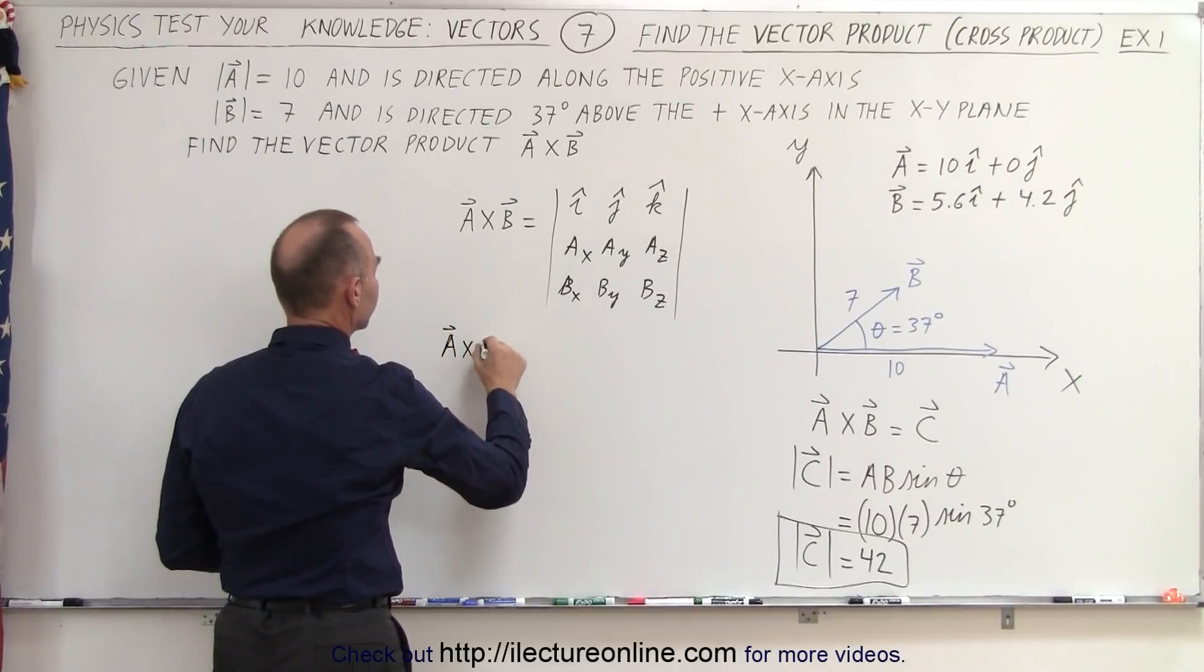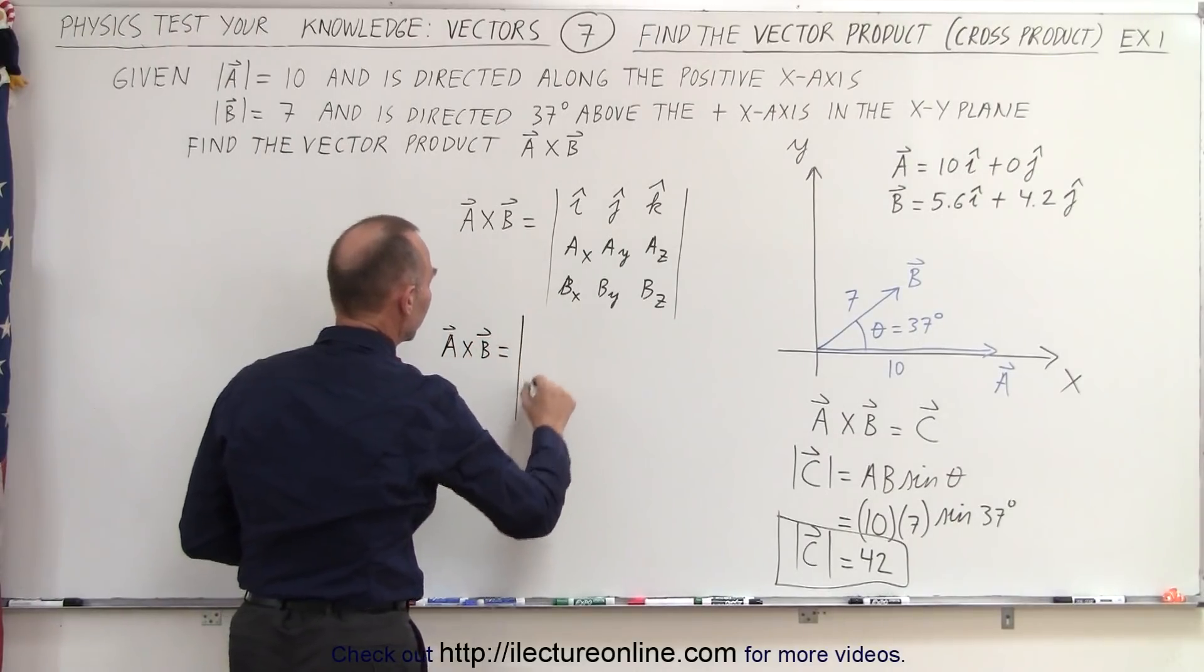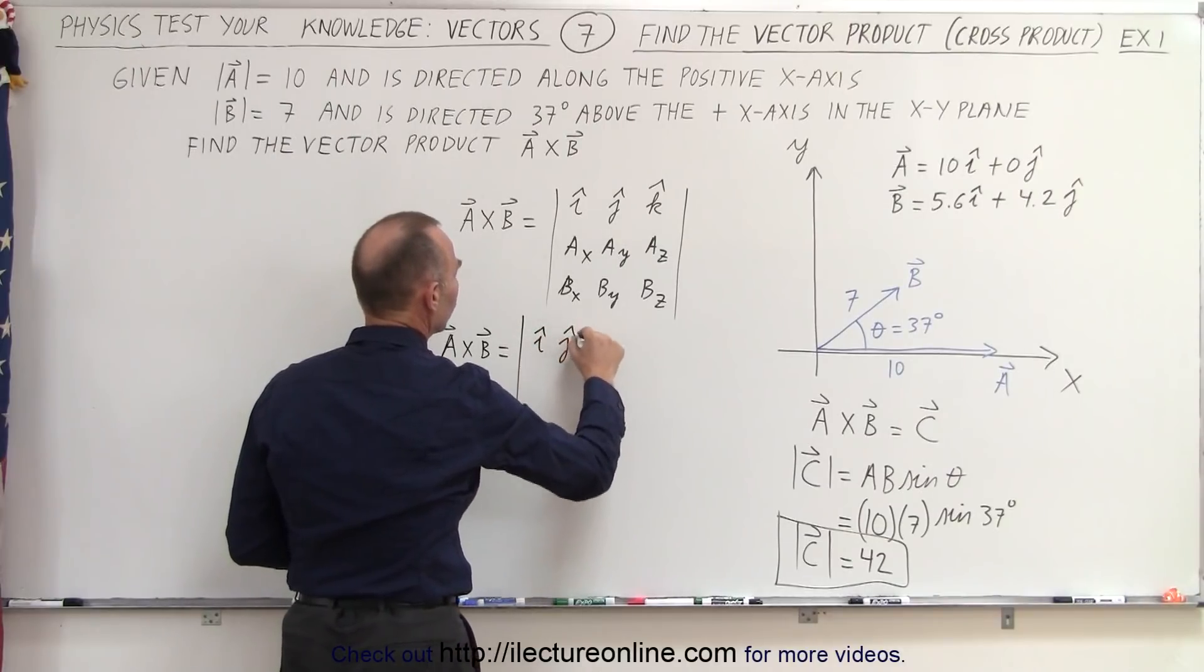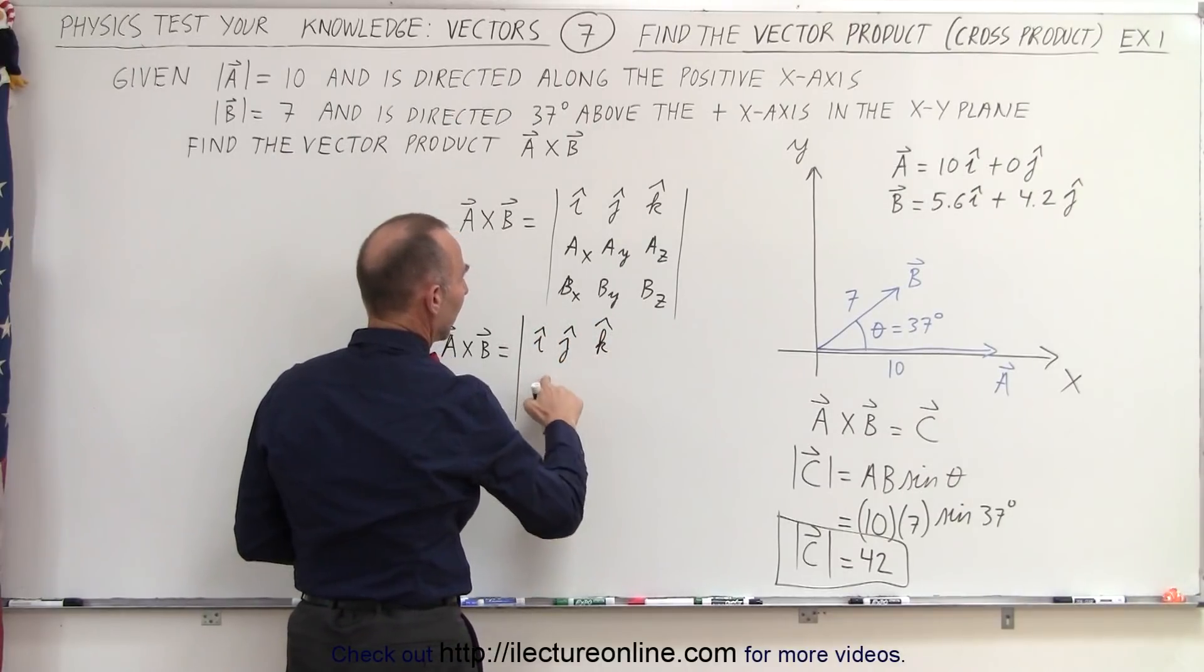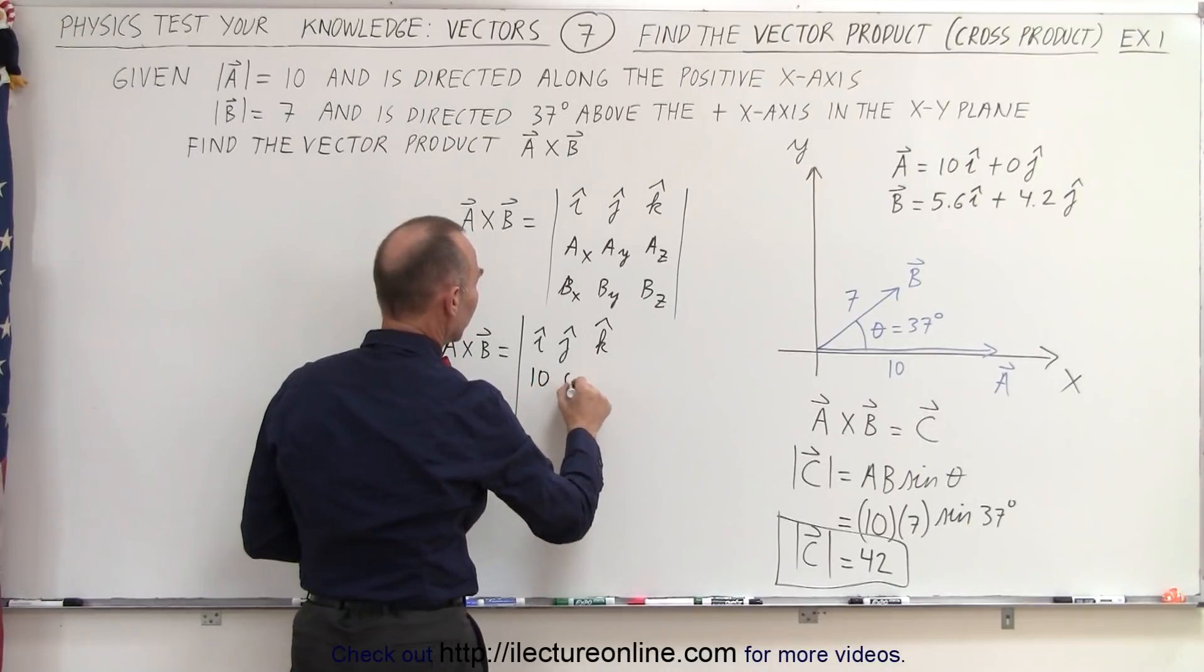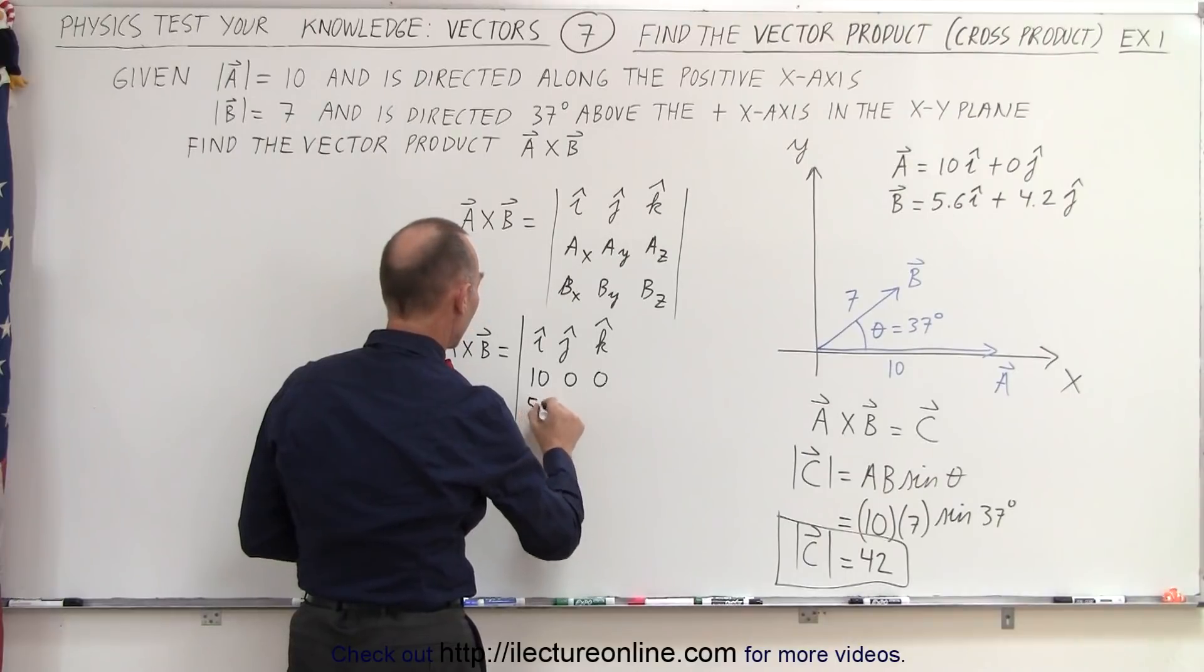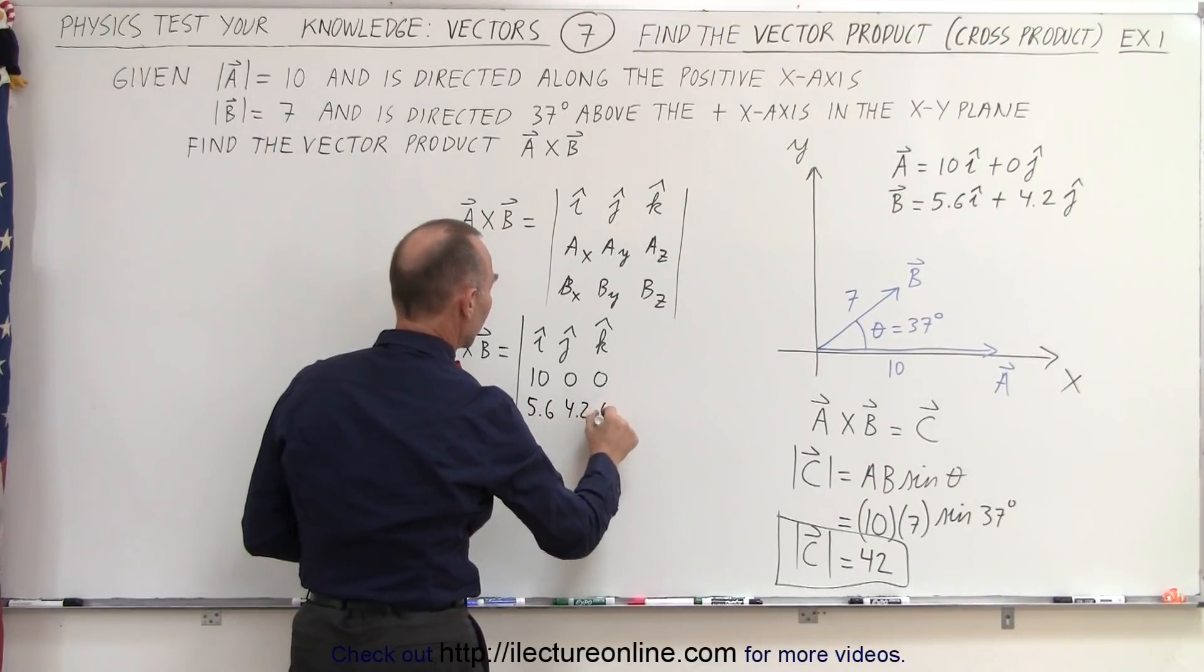We can now say that A cross B is equal to I, J, K, A_x, A_y, A_z. That would be 10, 0, 0. And for the B components, that would be 5.6, 4.2, and 0.